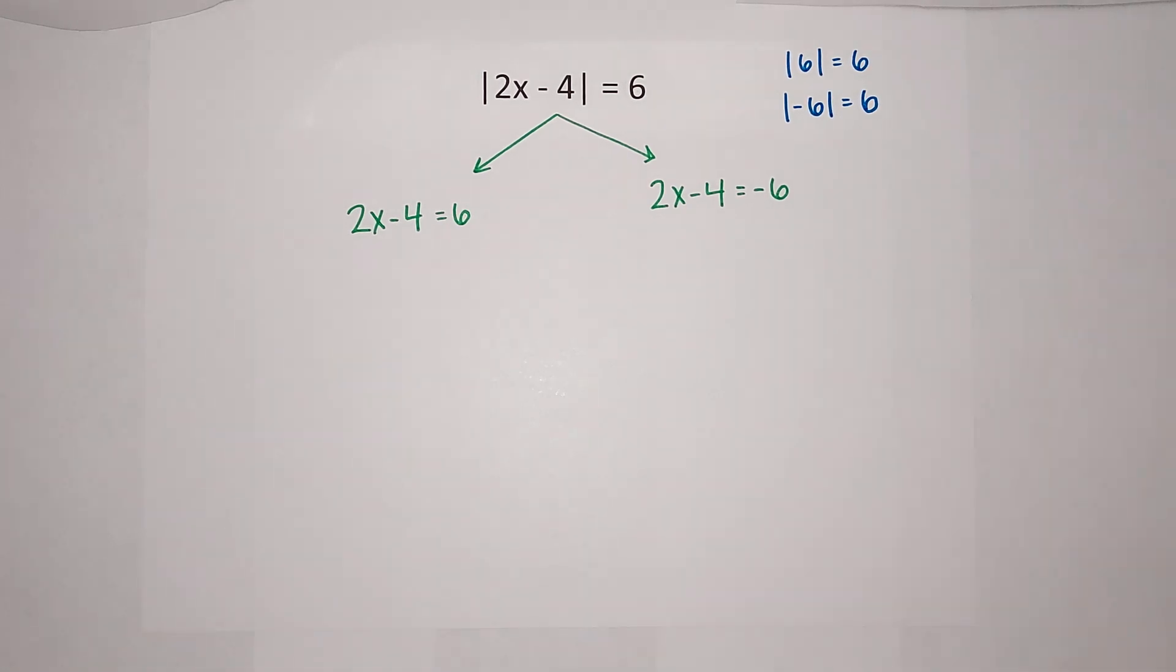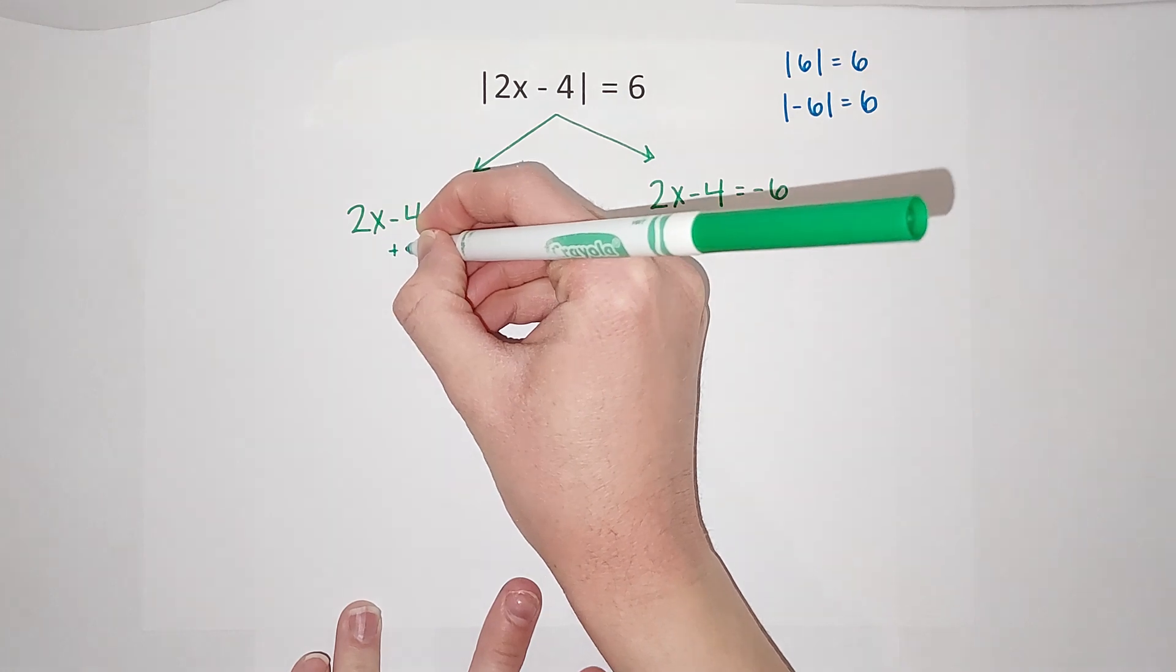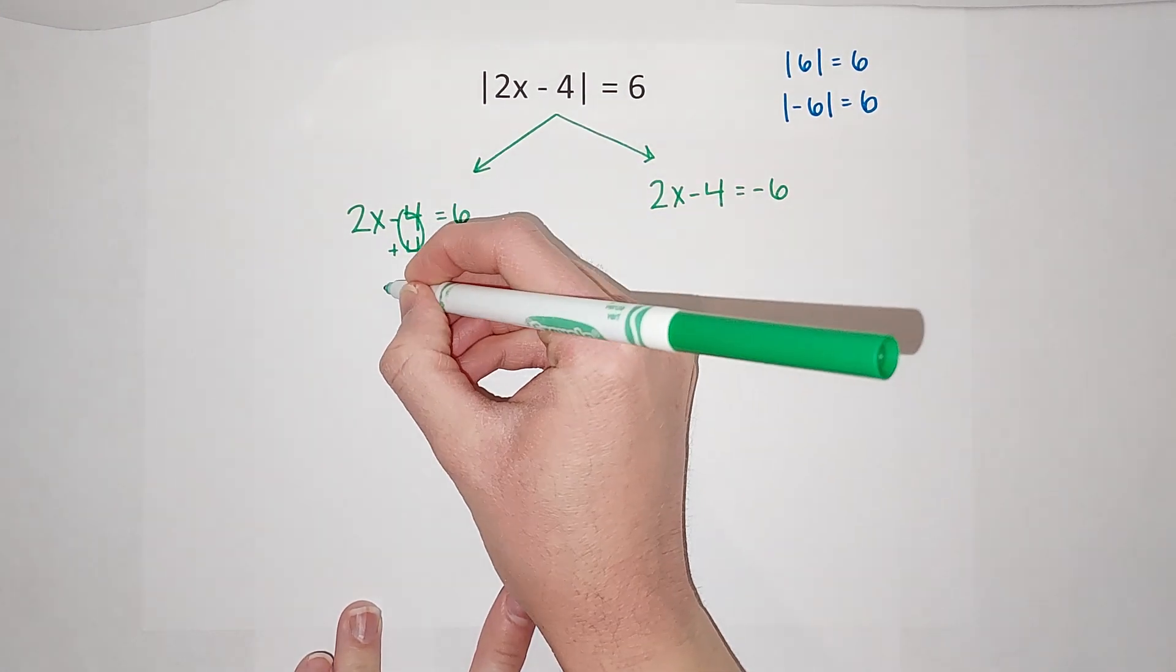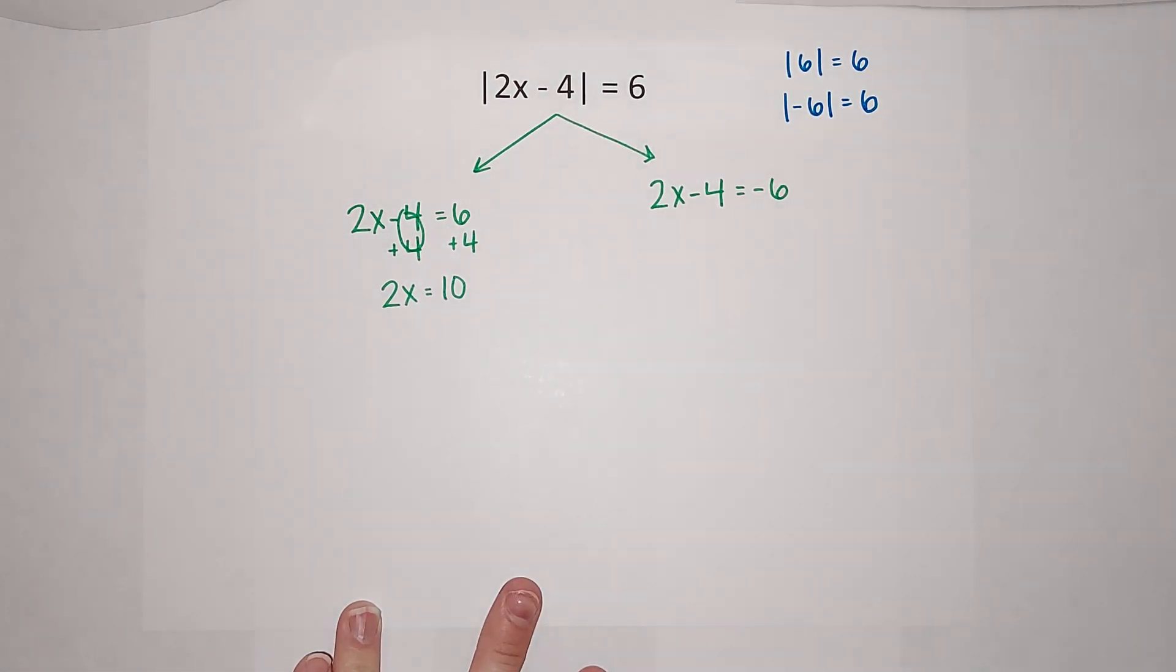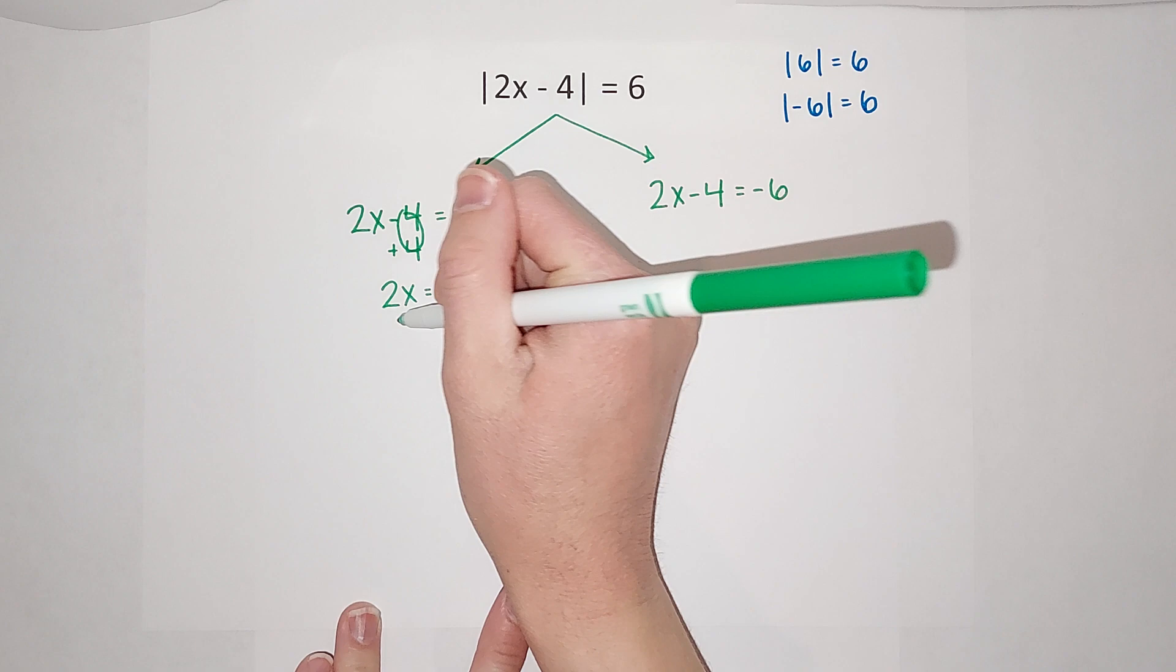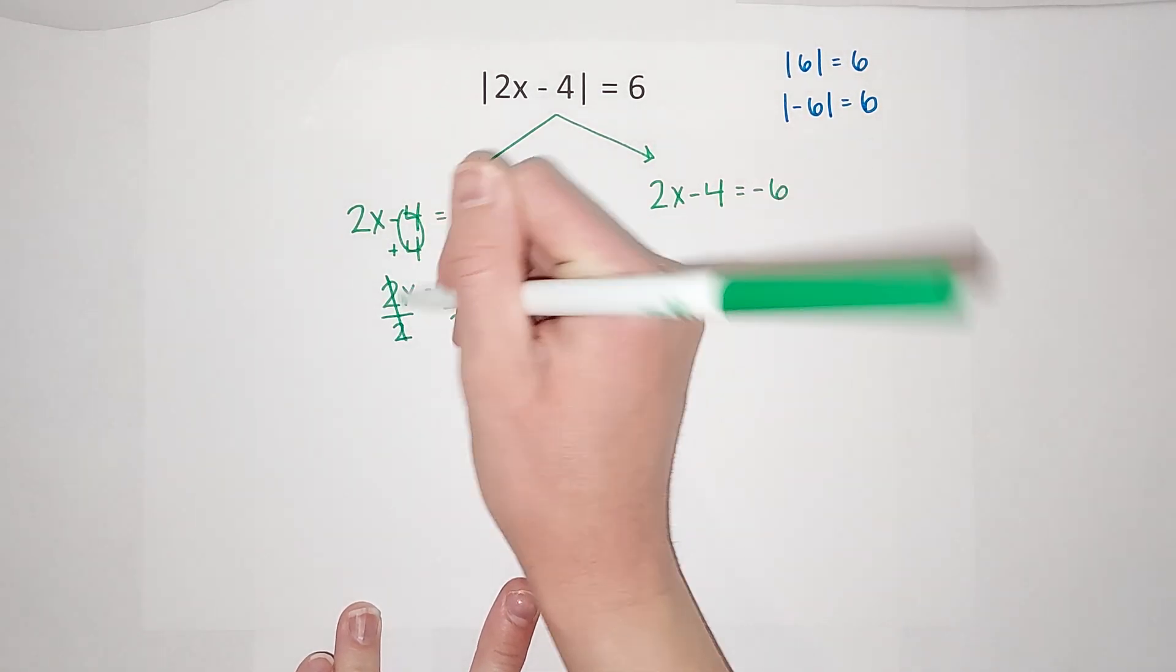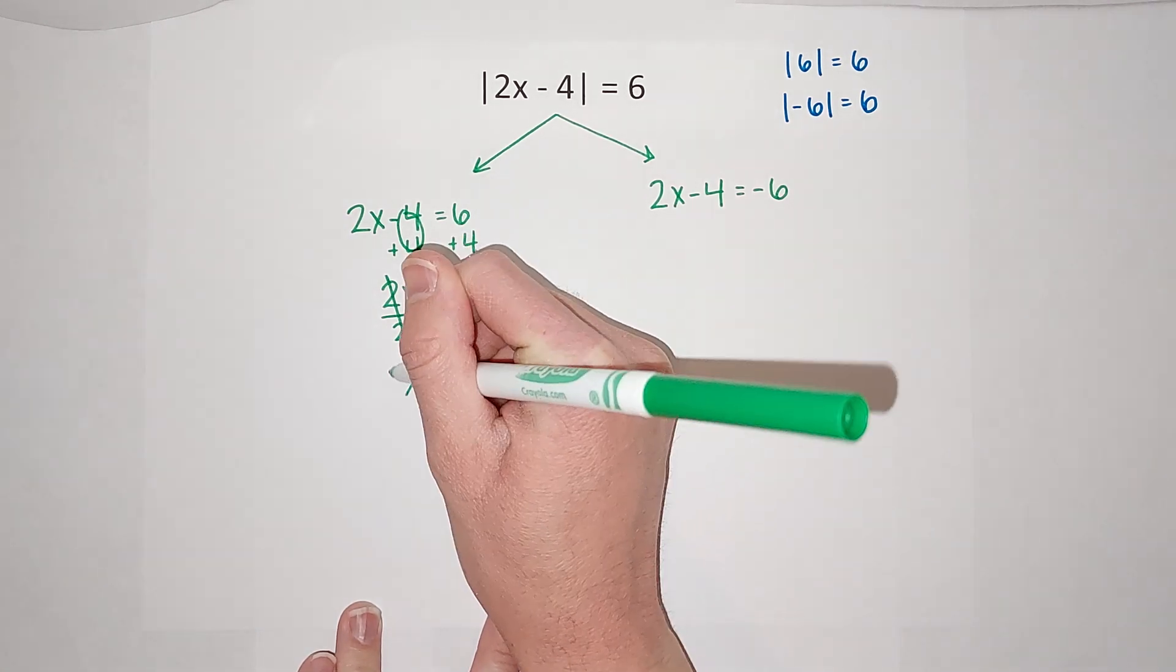Okay, so now I'm just going to solve both of these and see what we get for x. So to get x alone here I'm going to add four to both sides. I end up with 2x equals 10. Then to get rid of that two, they're being multiplied, so I'm going to divide on both sides.